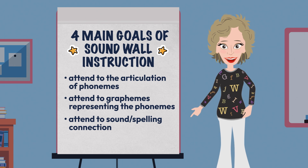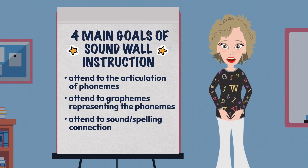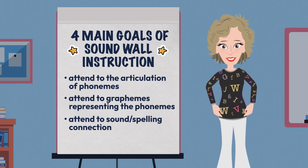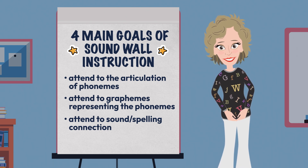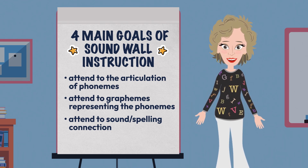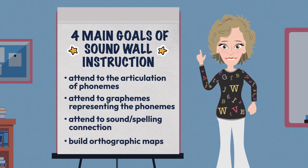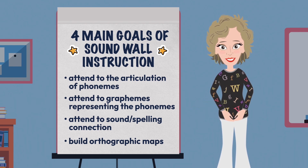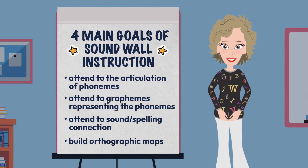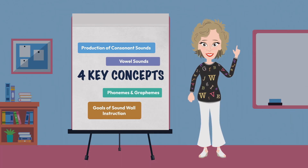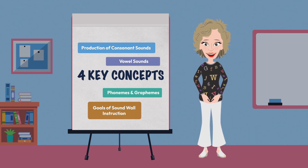The third goal of sound wall instruction is to help students attend to the sound-spelling connection. The sound-spelling system is a precursor to the skills of decoding, blending, and encoding and segmenting. As we know, decoding and encoding lead to comprehension and composition, so sound wall instruction helps students build foundational skills they will be using for the rest of their lives. The fourth goal is for students to build their orthographic maps, which get stored in students' brains as they master the sound-spelling system — all of this helps lead to fluency in reading. There were only four key concepts to review in this stop and jot, but they were loaded with lots of information critical for helping our students articulate their sounds correctly.